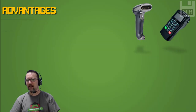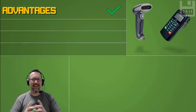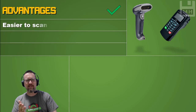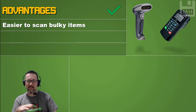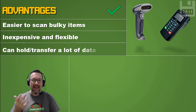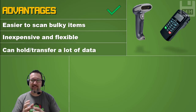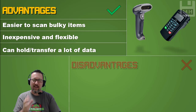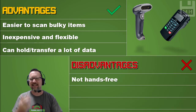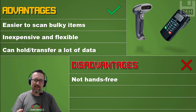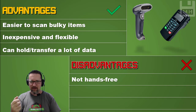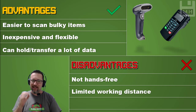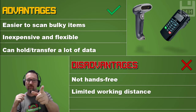Handheld devices such as handheld scanners or handheld point-of-sale systems have several advantages: they are much easier to use for scanning bulky items, they're inexpensive, flexible, and they can hold and transfer a lot of data without needing to be connected to something all the time. However, one disadvantage is that they are not hands-free — if you need to hold an item and scan it at the same time, it gets tricky.